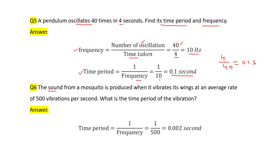The sound from a mosquito is produced when it vibrates its wings at an average rate of 500 vibrations per second. Frequency is given as 500. We have to calculate the time period. Time period is the reciprocal of frequency — that is 1 divided by 500 — which gives 0.002 second.